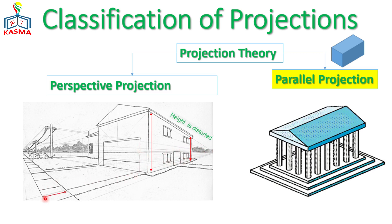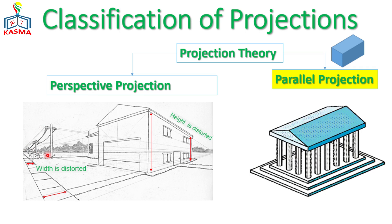If you stand and look far down a road, the width of the road appears diminished — it seems to narrow into a small gap. Similarly, an electric pole in the distance appears shorter than it actually is. That is the perspective of your view; the actual object has not changed. The reality is closer to what a parallel projection represents.